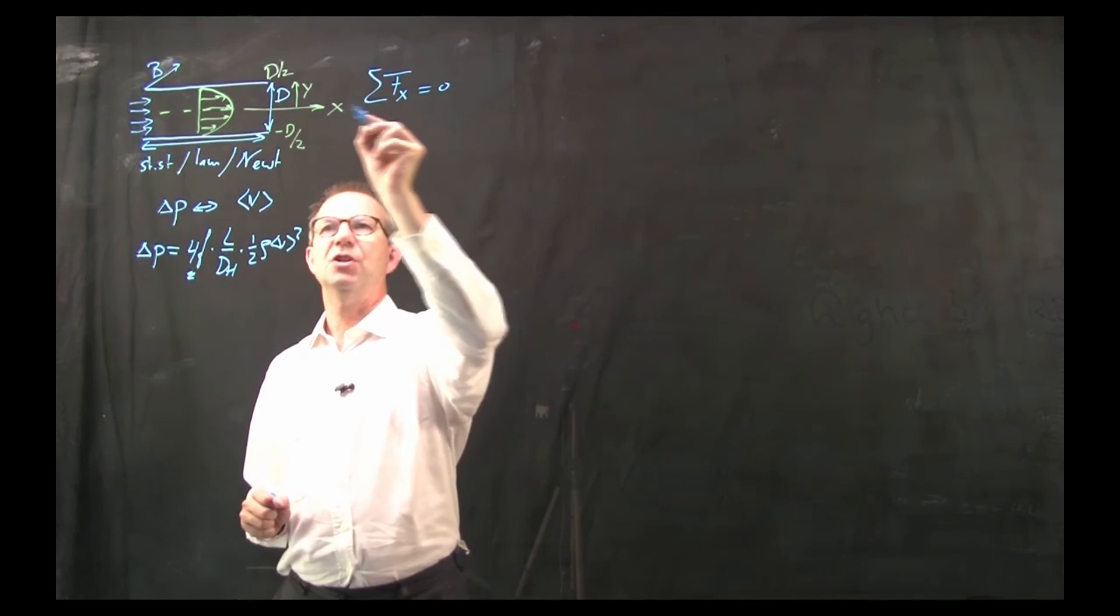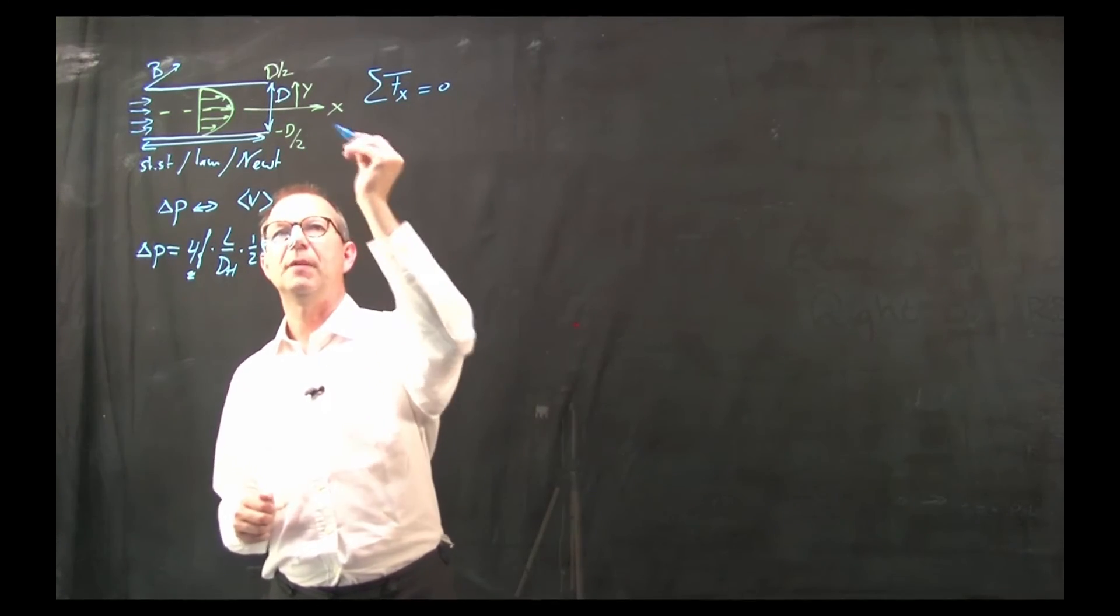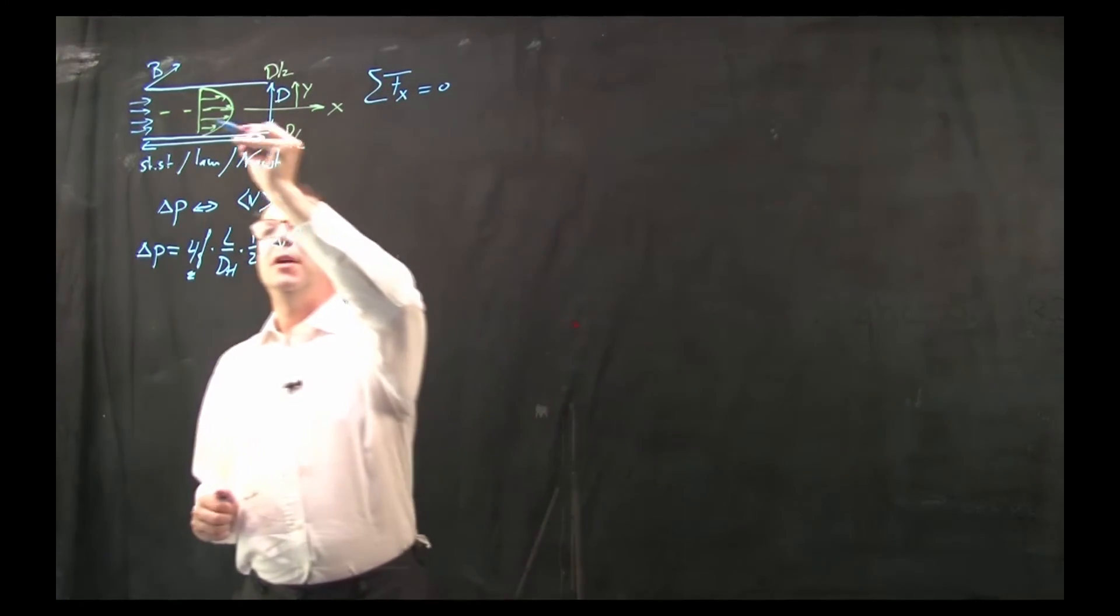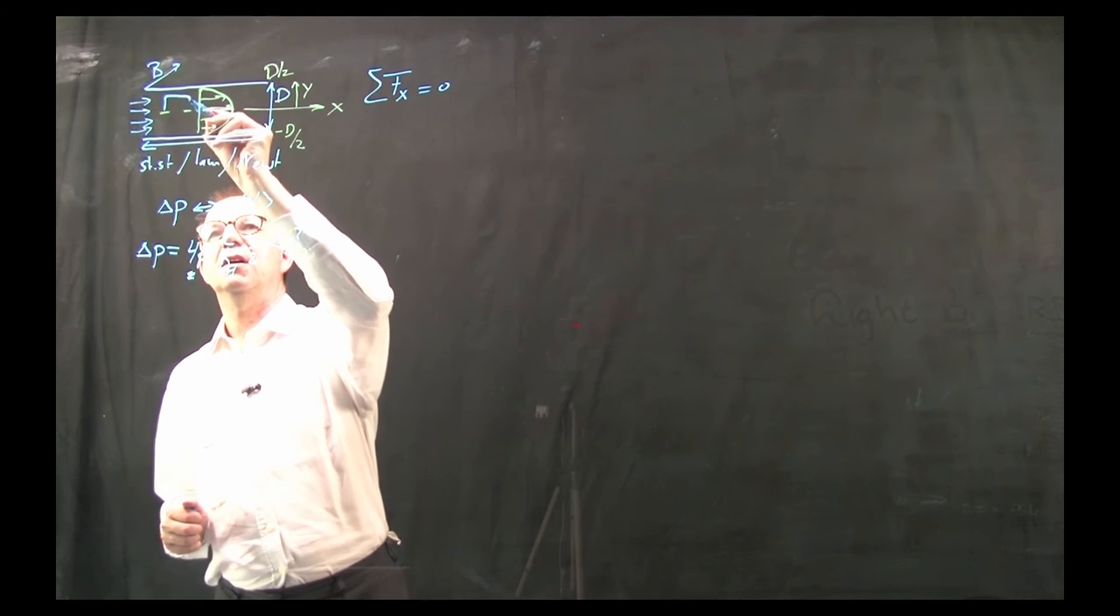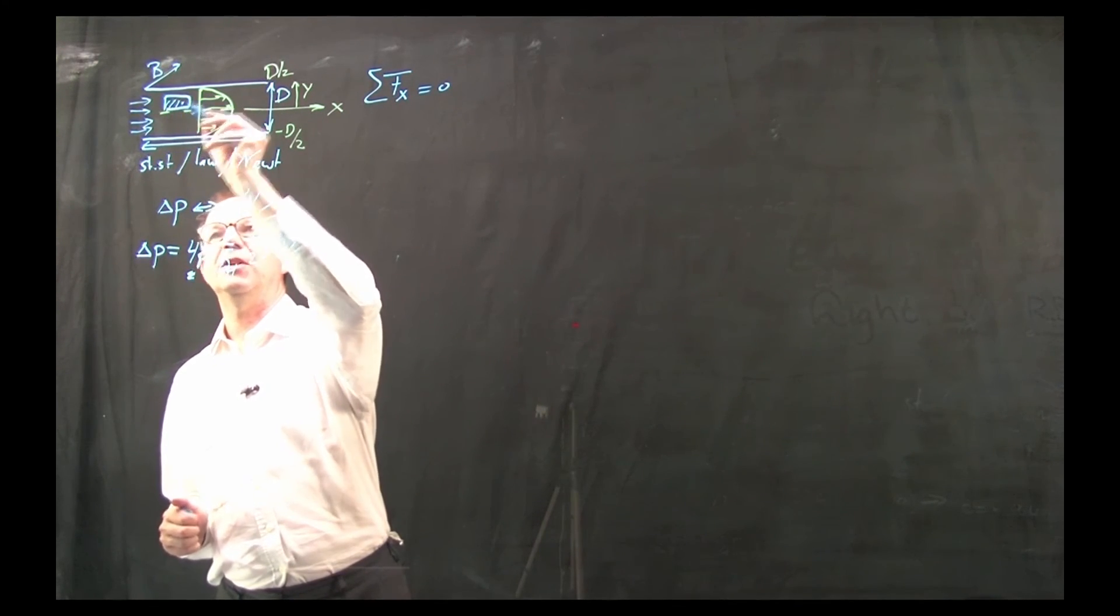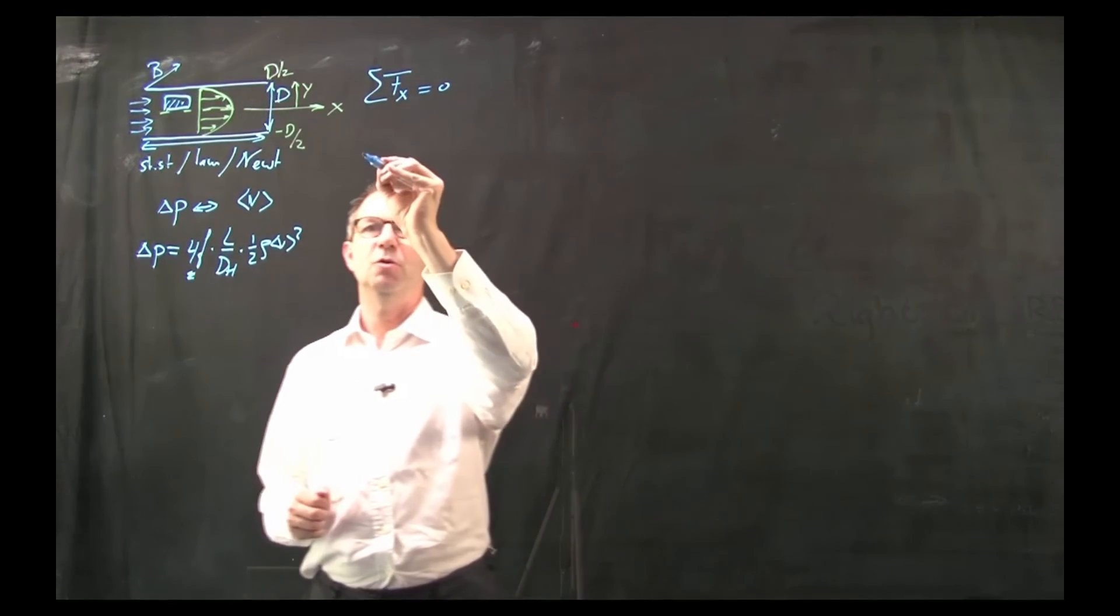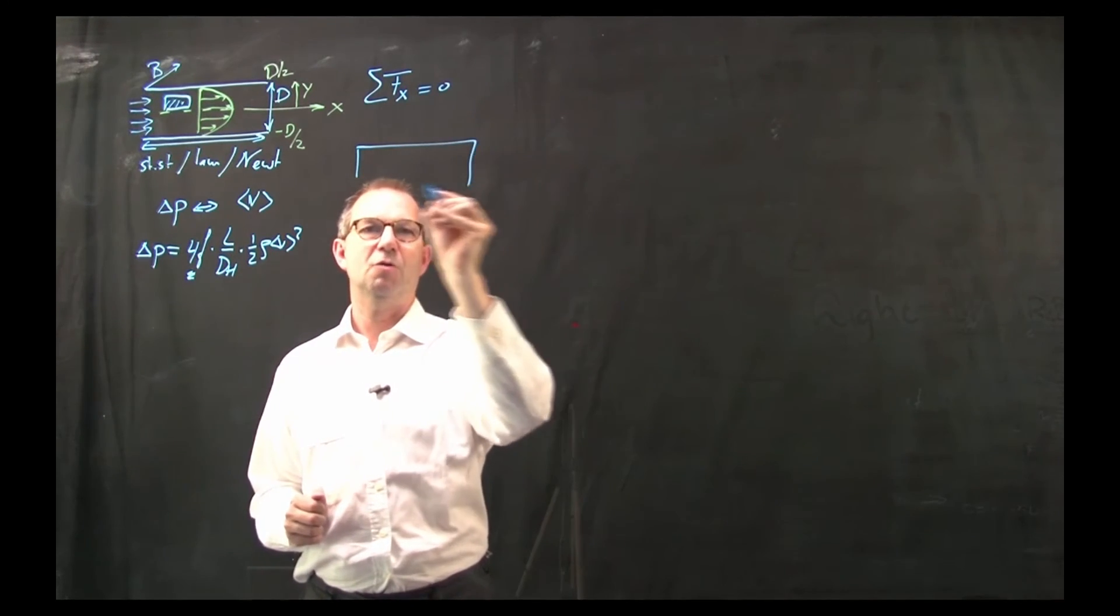Sum of forces in the x direction is zero. And I need to find a control volume and I'll take a small piece out of it and equate the sum of forces. So I'm going to repeat that here so that I can draw it a little bit bigger.